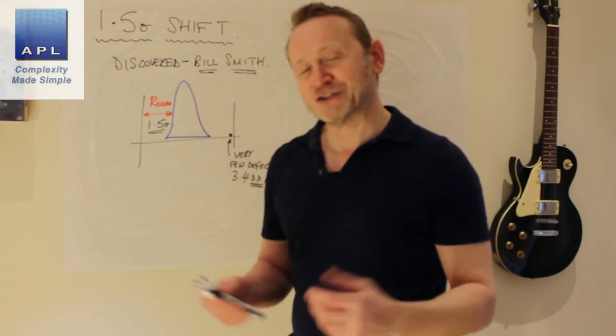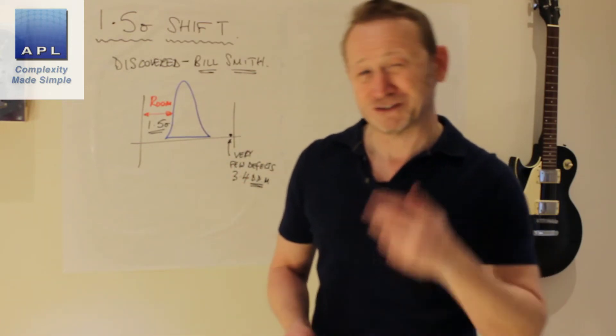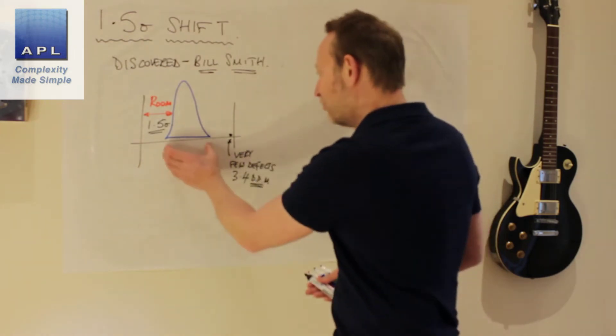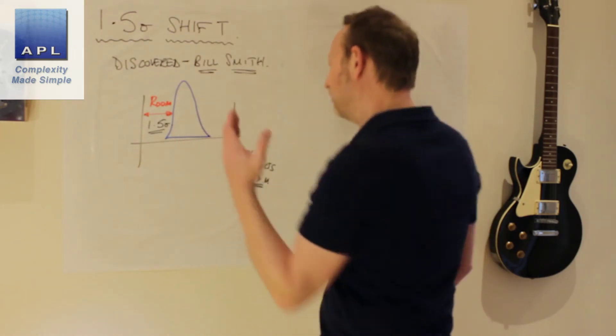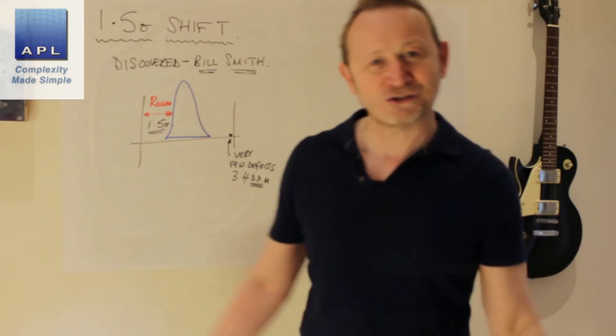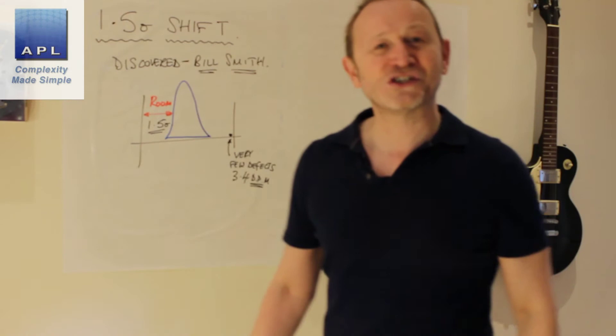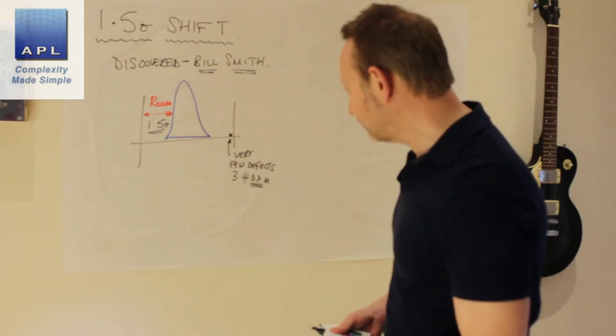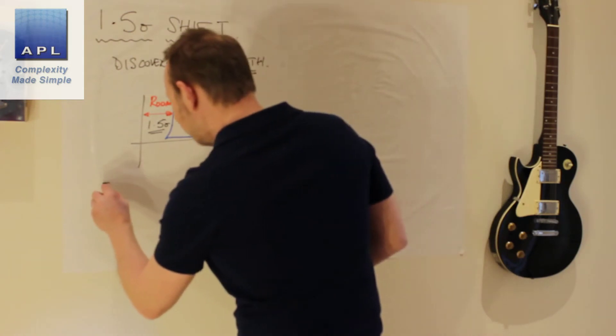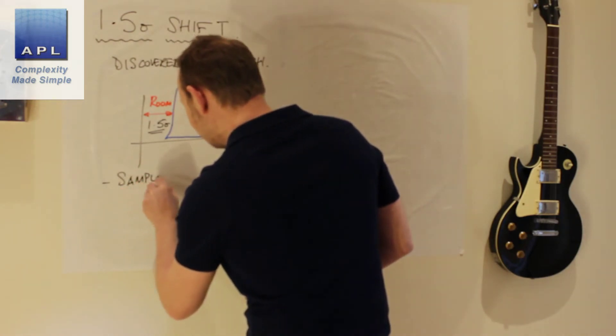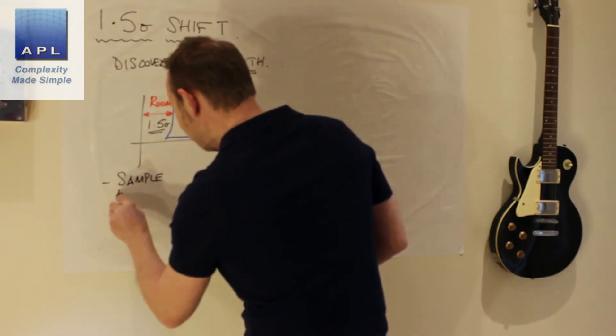So let's talk about the practical reason why the 1.5 Sigma shift needs to be taken into account. Why do you need all this room? Surely I'd just take my process, stick it on target. Why do I need it to be so good? If I just put it in the middle, everything will be right with the world.